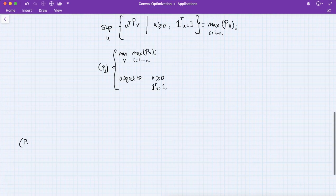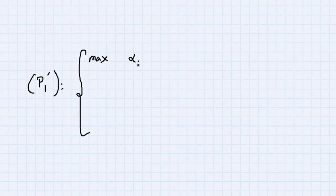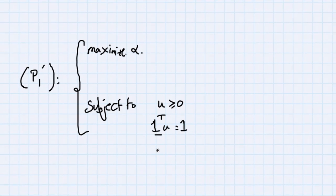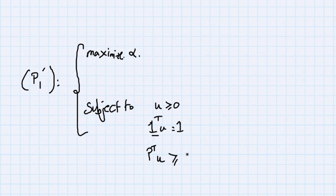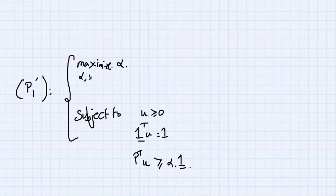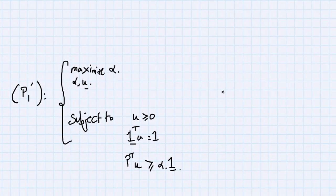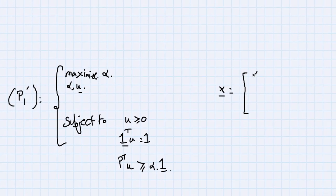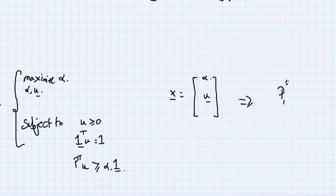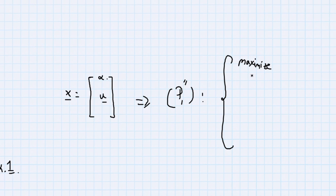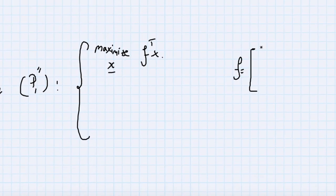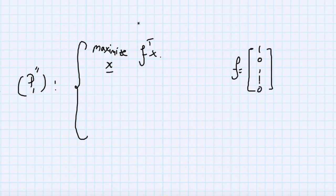We formulate P1-prime: maximize scalar alpha subject to u ≥ 0, 1^T u = 1, and P^T u ≥ alpha * 1 entry-wise. We then concatenate into a vector x where alpha is the first entry and u fills the remaining entries, rewriting P1-prime as P1-double-prime: maximize f^T x, where f = [1, 0, ..., 0] so that f^T x selects alpha.